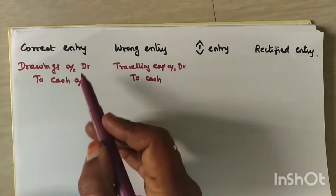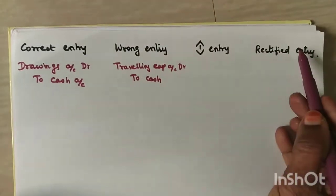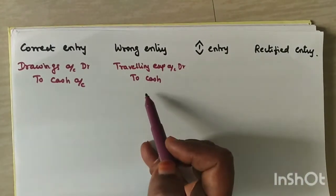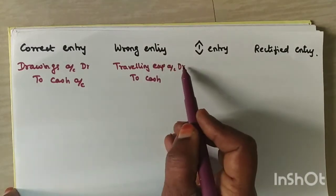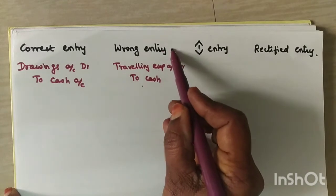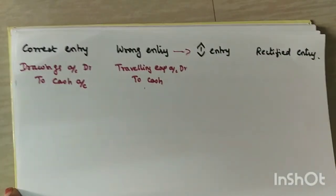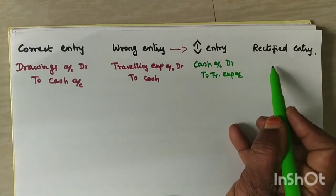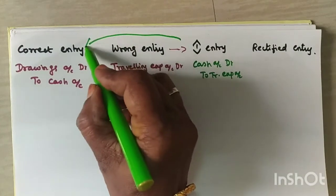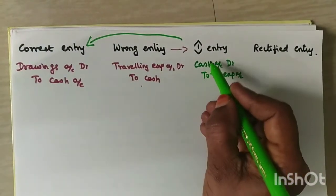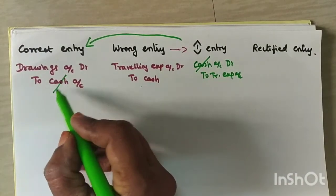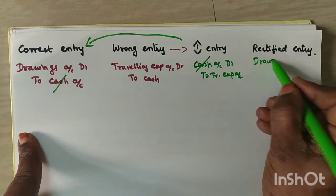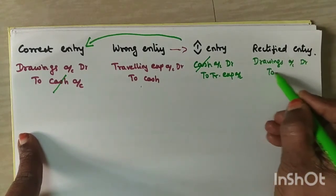We have the correct entry and wrong entry. The inverse (reverse) entry of the wrong entry is: cash account debit to travelling expenses. Now, to find the rectified entry, we cancel the matching items in the inverse entry and correct entry. Cash on debit and cash on credit cancel out, leaving: drawings account debit to travelling expenses.